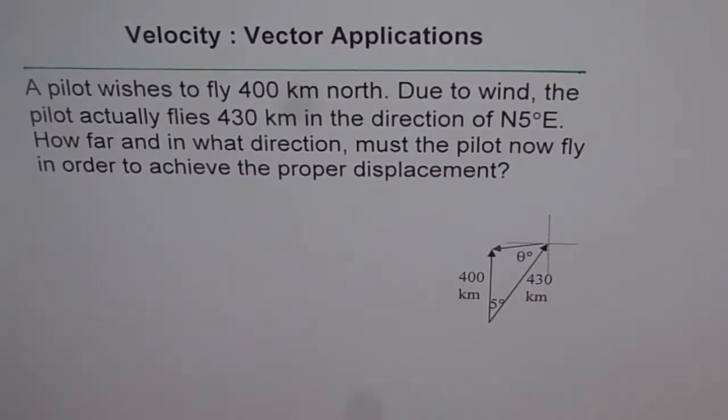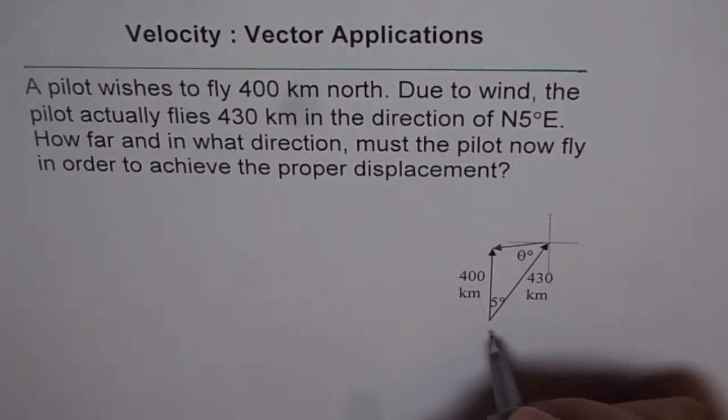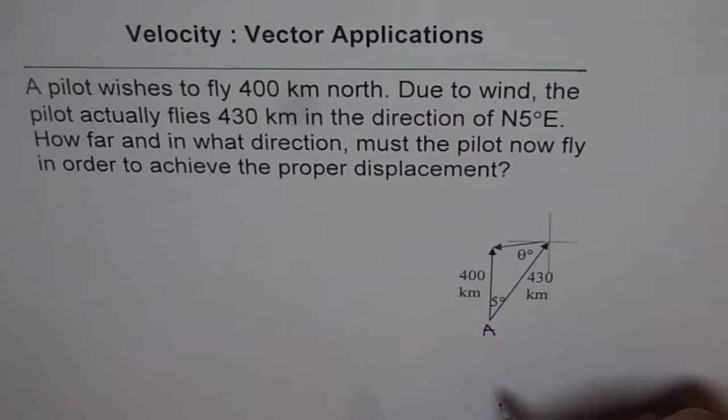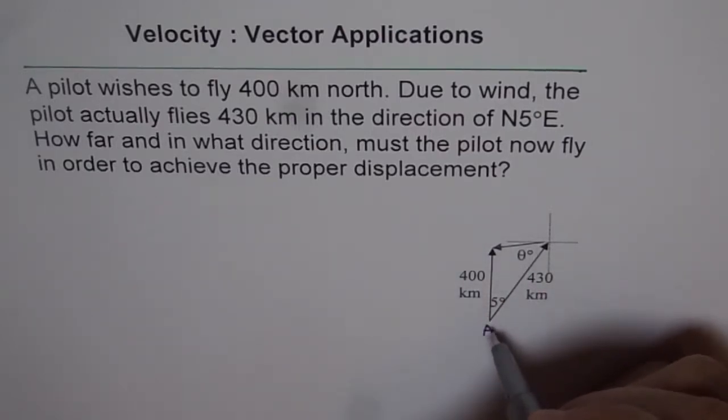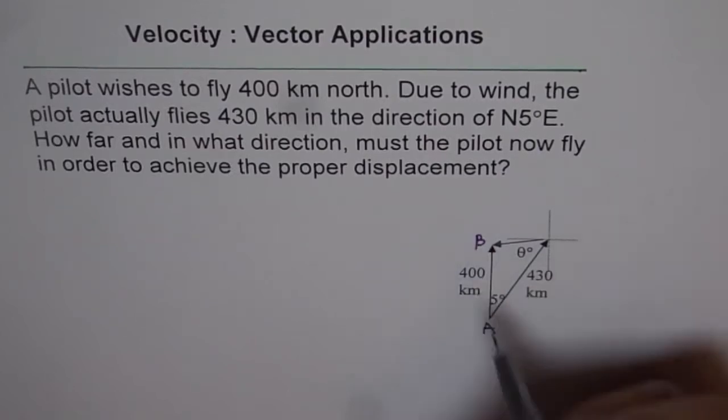I have already given you a vector diagram. Let's try to understand this. It shows the displacement. Here we have the original position from where the pilot takes off. Let's call it A. The pilot wants to go 400 km north to the point B.